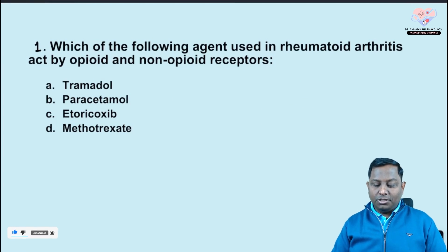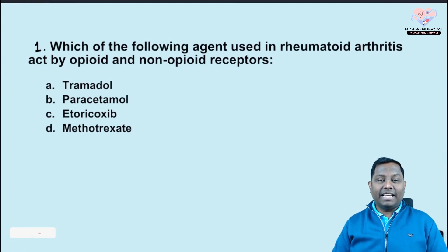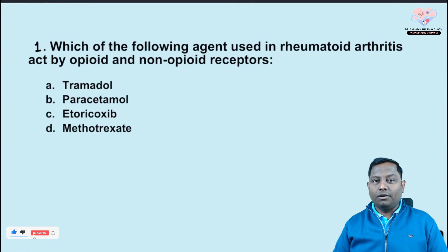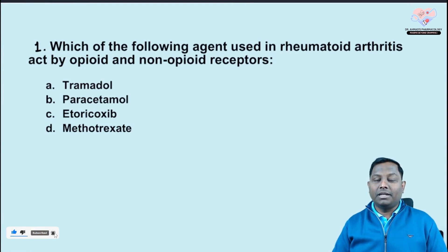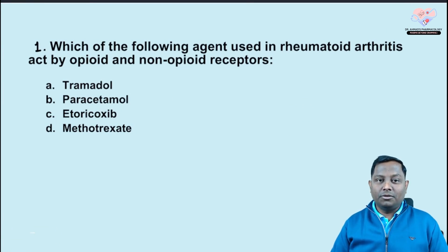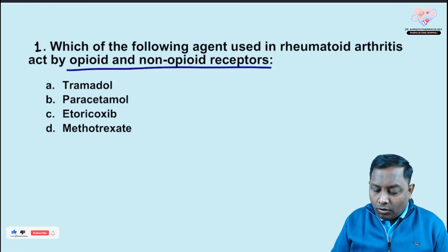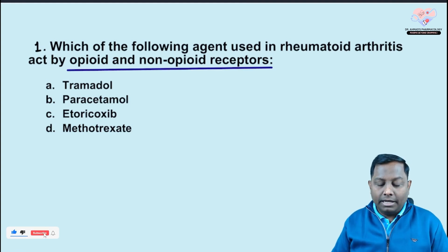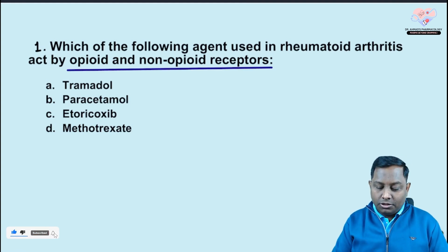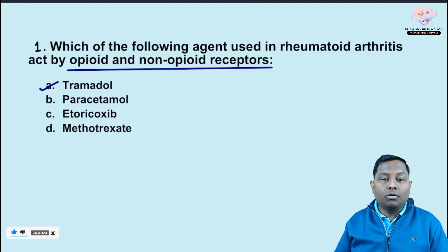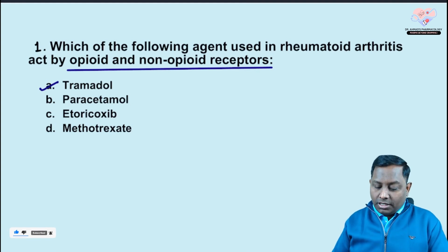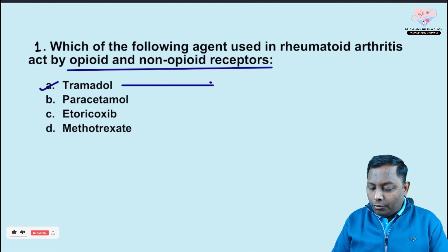The very first question we have today is: which of the following agents used in rheumatoid arthritis acts by opioid and non-opioid receptors? This question is from June 2022 FMGE, but it has also been asked in NEET PG and INICET. The answer to this question is tramadol.